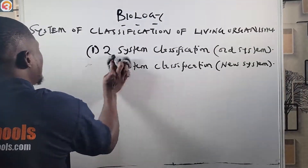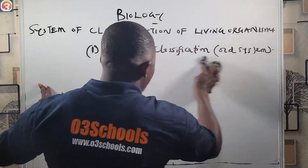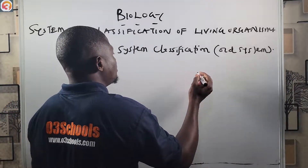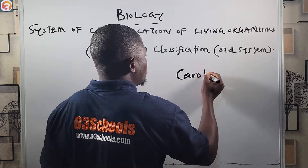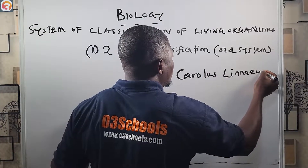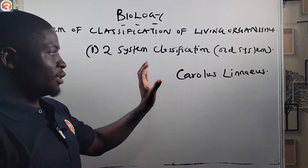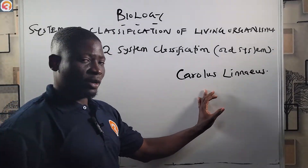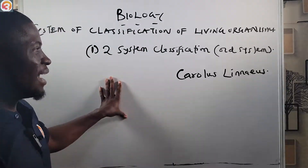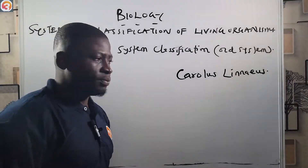As proposed by Carolus Linnaeus, who is the father of taxonomy, this two-kingdom classification system classified living organisms into two kingdoms.